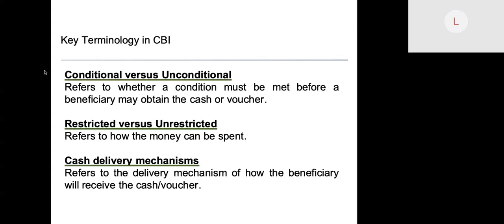Key terminologies in CBI: conditional and unconditional cash refers to whether a condition must be met before a beneficiary may obtain the cash or voucher. This could include things like cash for work, attendance at training, or bringing children for doctor's check-ups, depending on what the objectives of the program are.